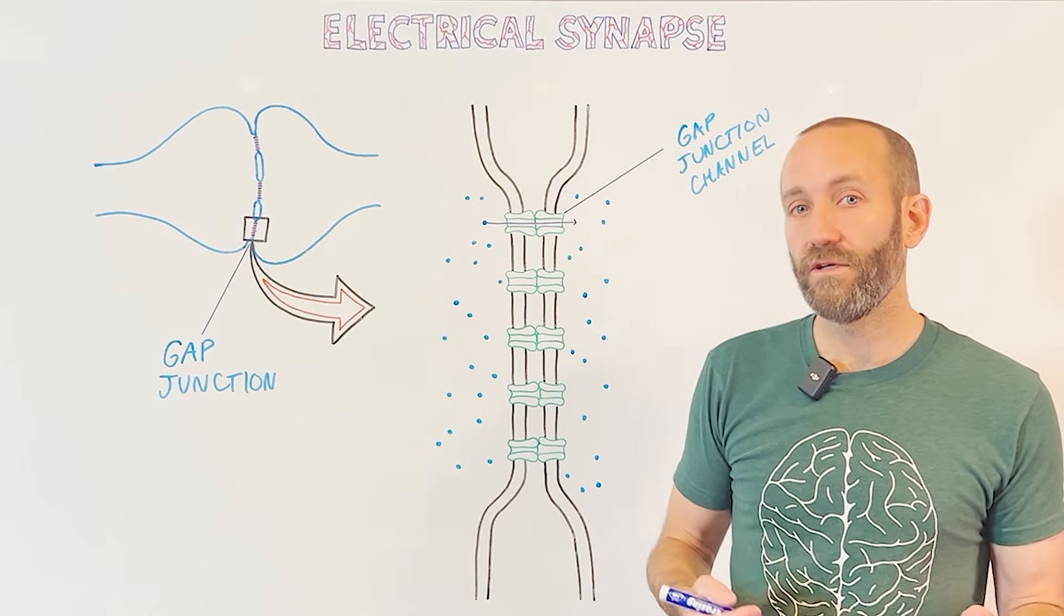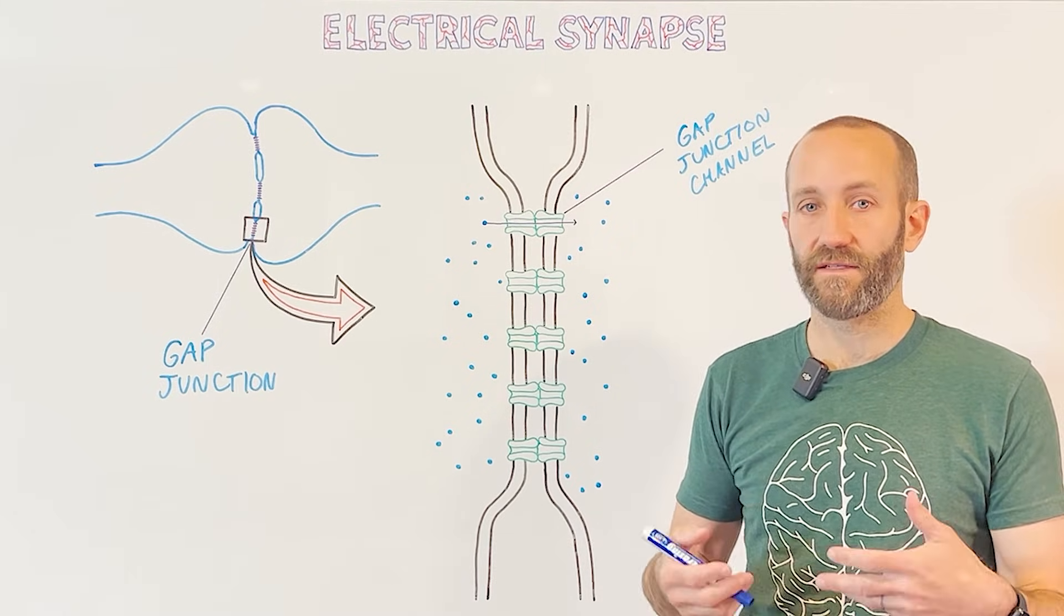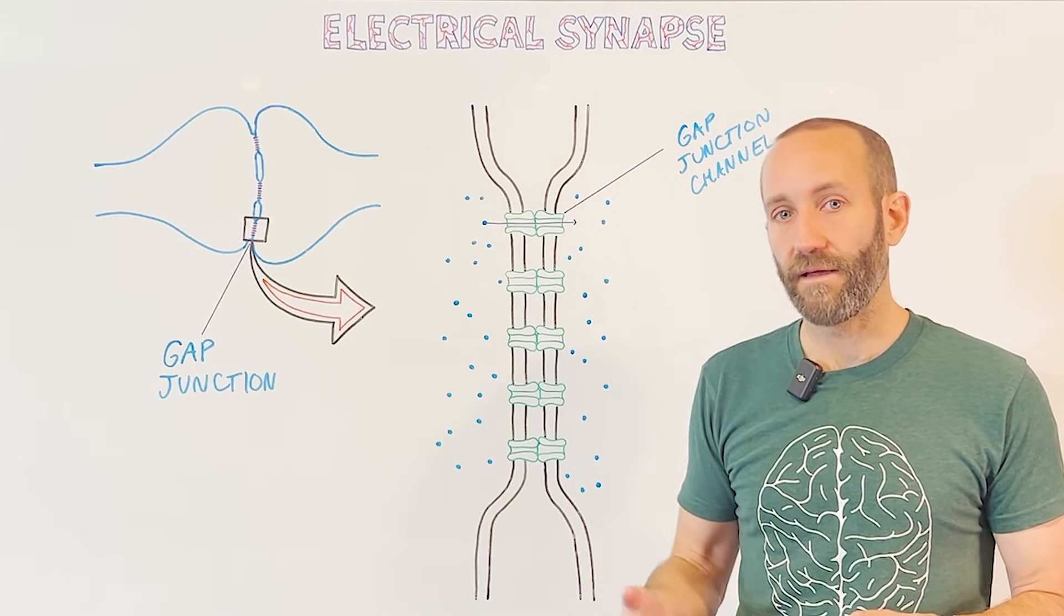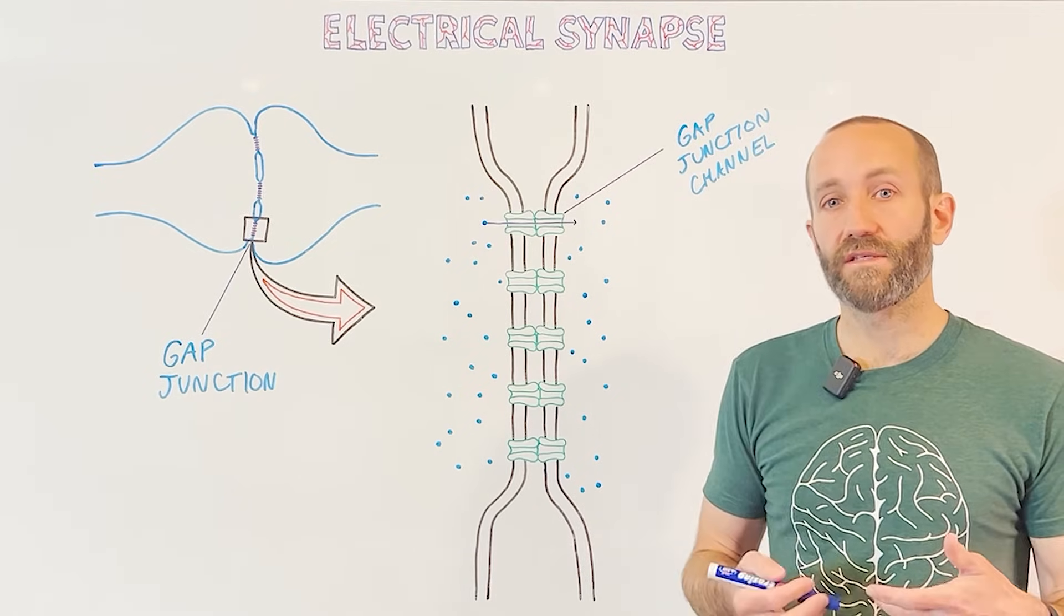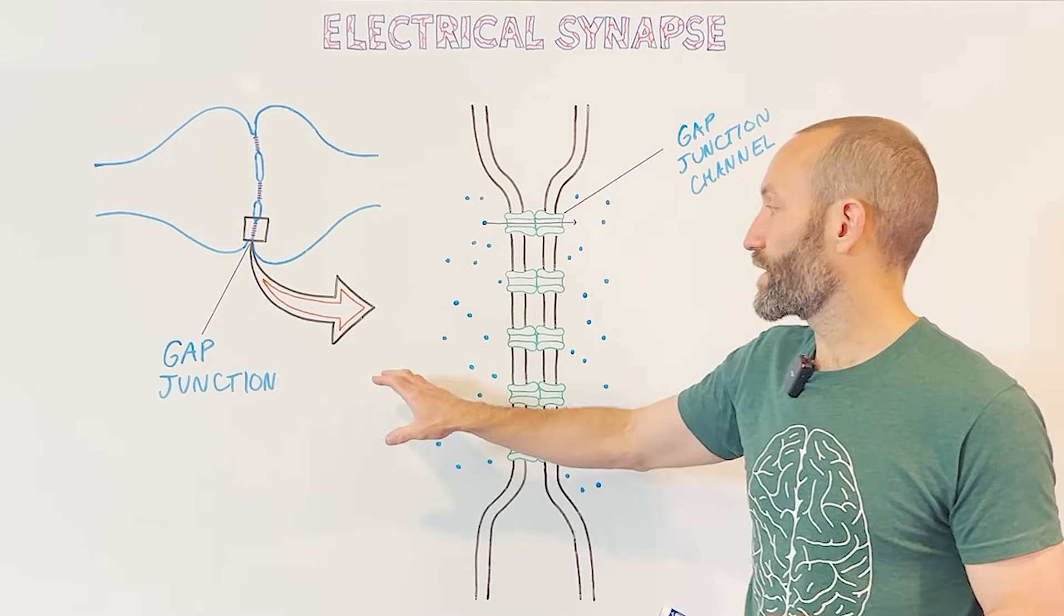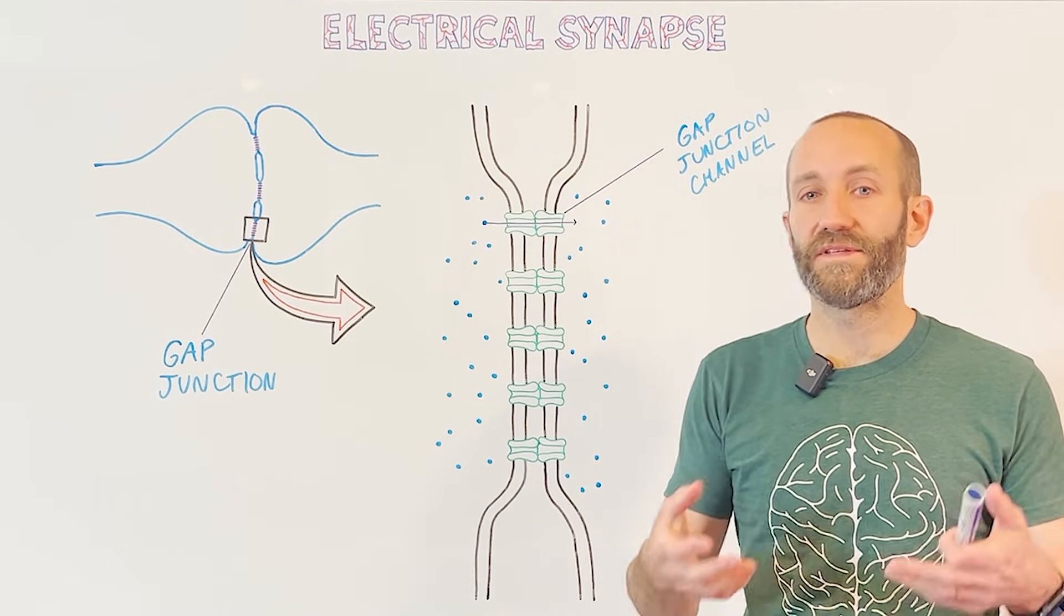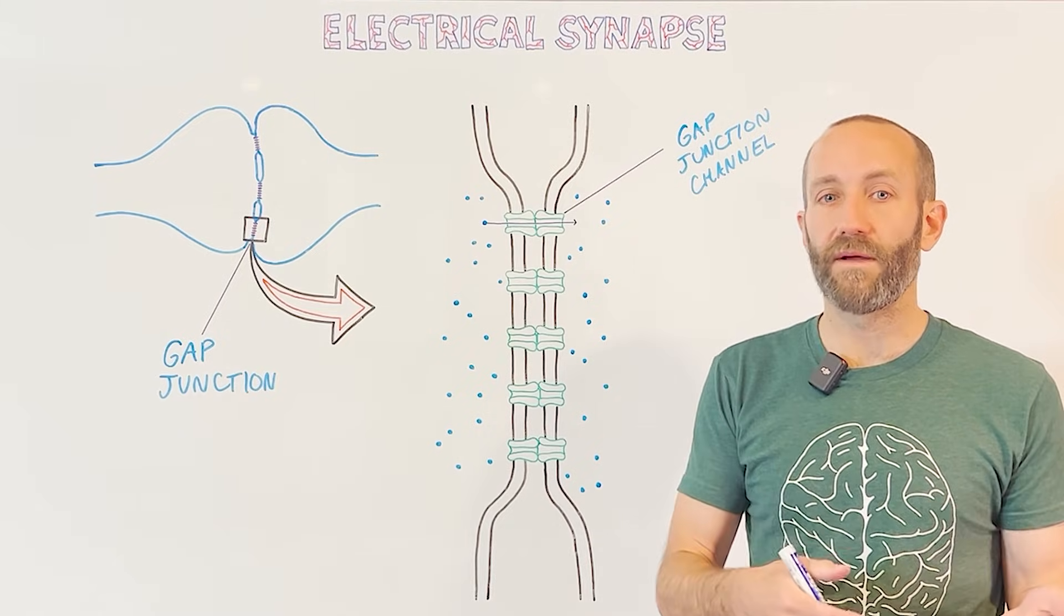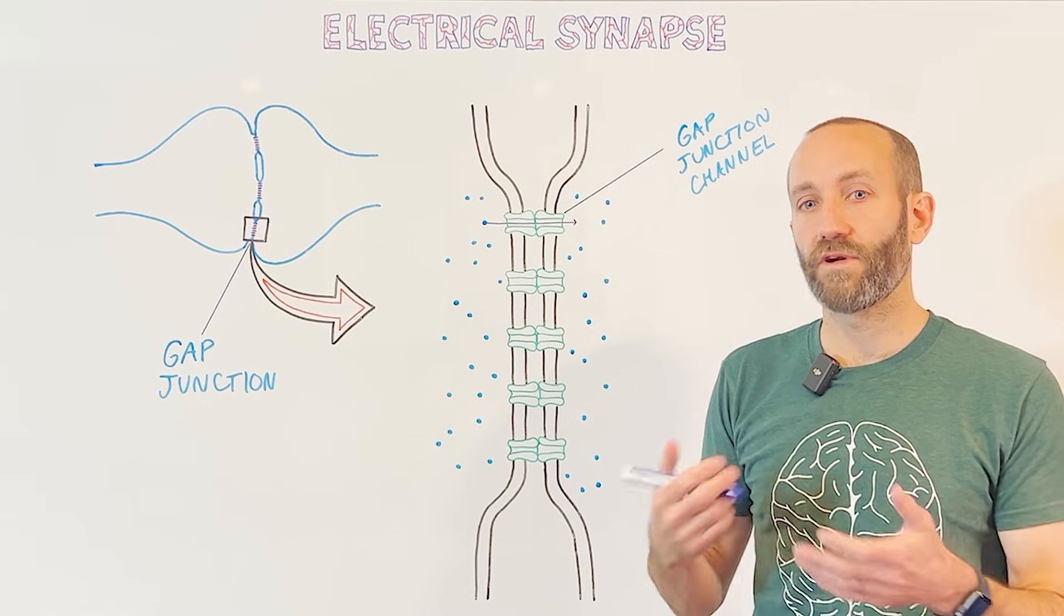While electrical synapses are not common in humans, they do offer some benefits. Transmission at these synapses is very fast. In fact, it's virtually instantaneous. While chemical synapses are fast as well, they do involve a slight delay. And there's essentially no delay at all at an electrical synapse. Communication across electrical synapses can also typically occur in both directions, meaning the presynaptic neuron can send signals to the postsynaptic neuron and vice versa. This enables electrical synapses to be useful in synchronizing electrical activity among groups of neurons. There are neurons, for example, in the brainstem that are involved in regulating breathing, and they use electrical synapses, which ensures they're working in a synchronized manner.